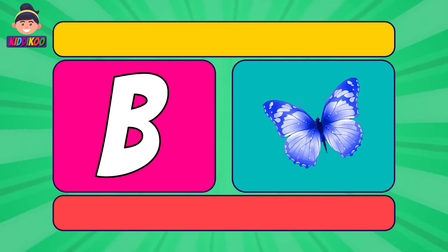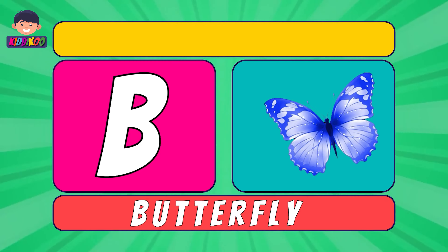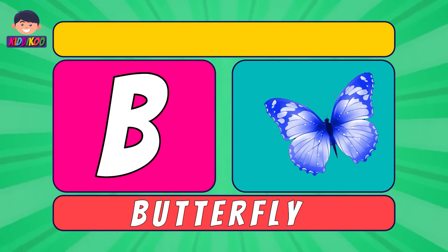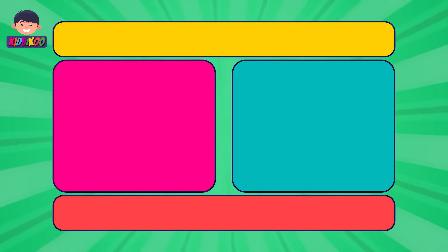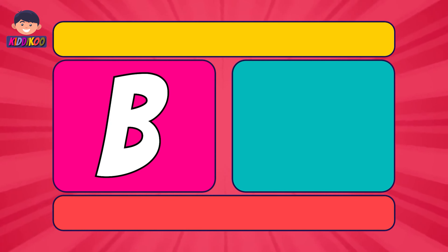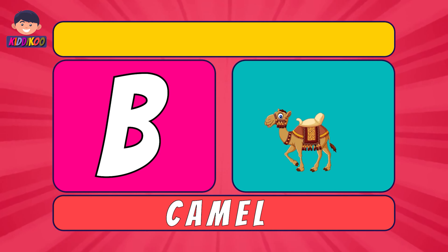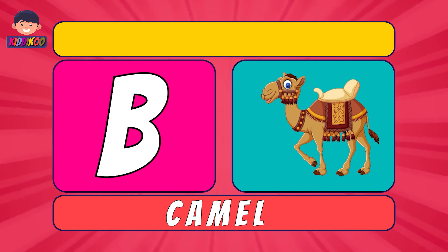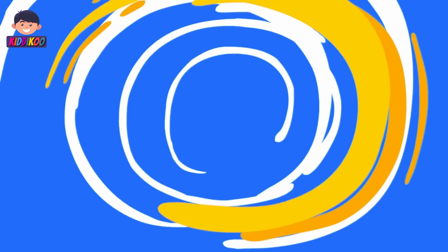Next letter is B. B for Butterfly. Butterfly. Next letter is C. C for Camel. Camel.